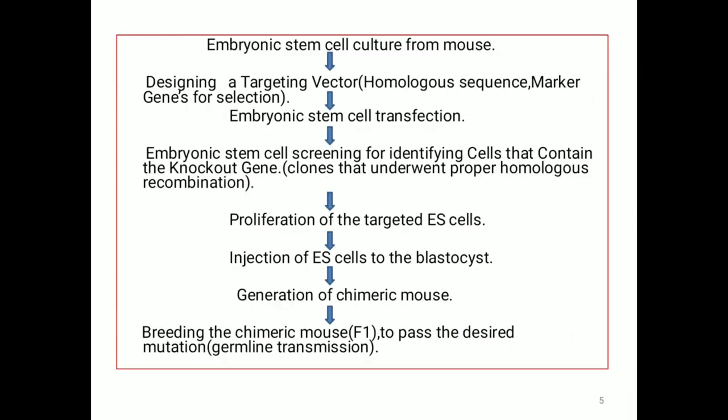This is the flowchart showing the steps of the gene targeting method. As this method is done in embryonic stem cells, the first step is the culturing of embryonic stem cells from mouse. The second step is designing a targeting vector, which will contain a homologous sequence and a marker gene for selection. The third step is embryonic stem cell transfection.